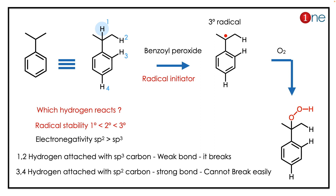So the tertiary radical forms. Next, oxygen attacks and you have peroxide formation. The key concept to learn here is that benzoyl peroxide is a versatile reagent — it promotes radical formation in reactions like this.